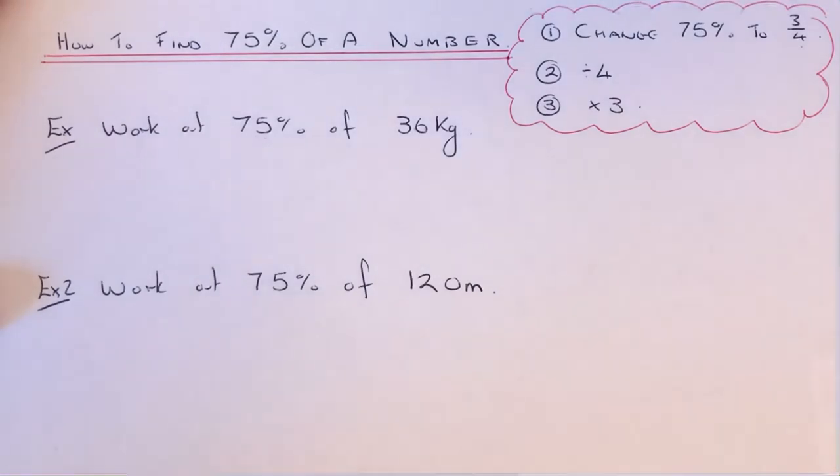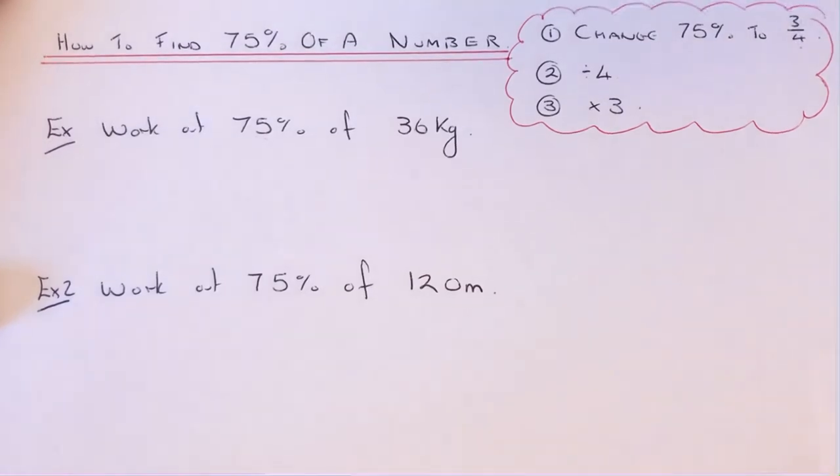What you're doing is working out a fraction of a number. To do this, you just have to divide by the bottom and times by the top. So you divide by four and then times by three.